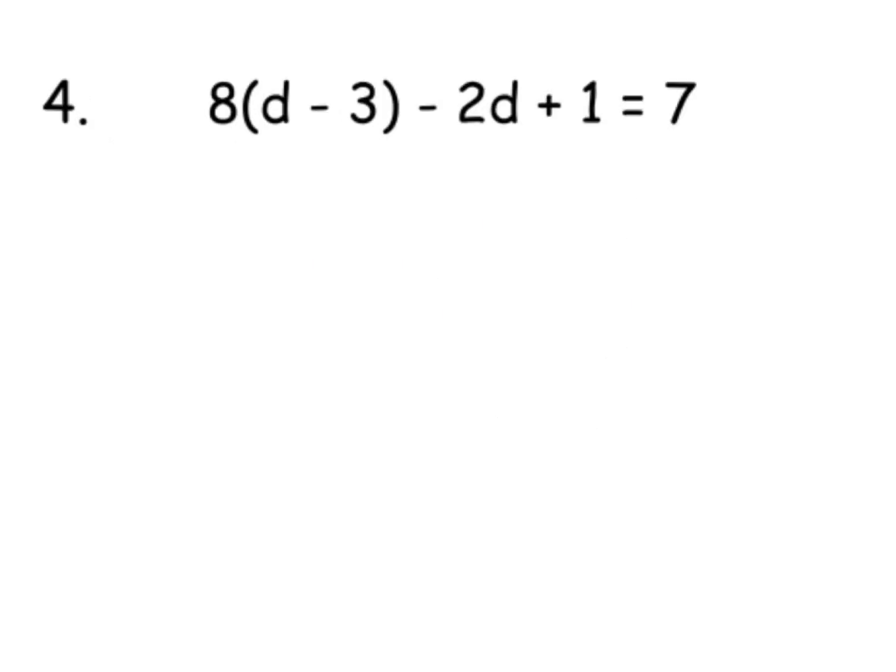Okay, this one we're starting to get a wee bit trickier. We've got brackets and a bit of tidying up, but essentially it will become one of the simple two-step equations. So let's multiply the bracket first. This will give us 8 times d is 8d, 8 times negative 3 is negative 24. Now this bit is not in the bracket, so don't be fooled and multiply that by 8. It's just going to stay as it is just now—take away 2d plus 1 equals 7.